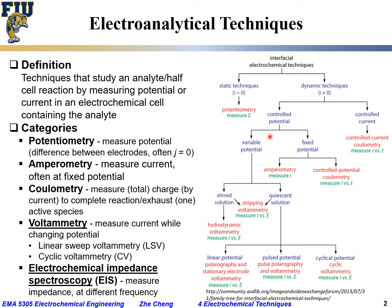Among dynamic techniques, some control potential and some control current. For controlled current techniques, for example, controlled current coulometry involves stepping up current to a constant value and measuring total charge via current versus time until one analyte is exhausted. You can also do galvanostatic measurement — controlling constant current and measuring potential with time — which tells us about electrode reaction kinetics.